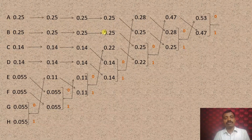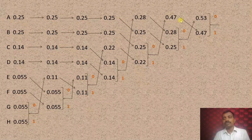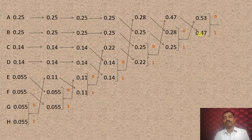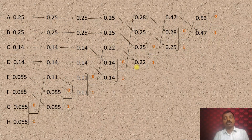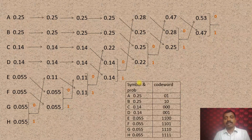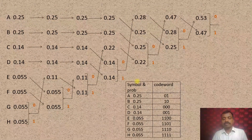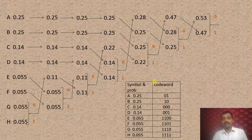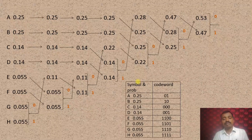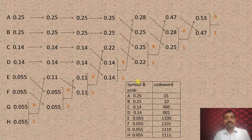For B, tracing backwards: 0 is assigned, then continuing the trace, 1 is assigned. Therefore, 10 is the code word for B. Like that, we can continue this procedure and all code words are generated. Next, for this set of code words, we have to calculate the coding efficiency.